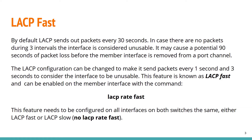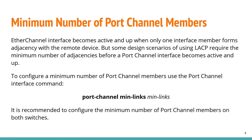LACP fast can be enabled on the member interface with the command 'lacp rate fast'. To disable this feature you need to use 'no lacp rate fast'. This feature needs to be configured on all interfaces on both switches the same — either LACP fast or LACP slow.